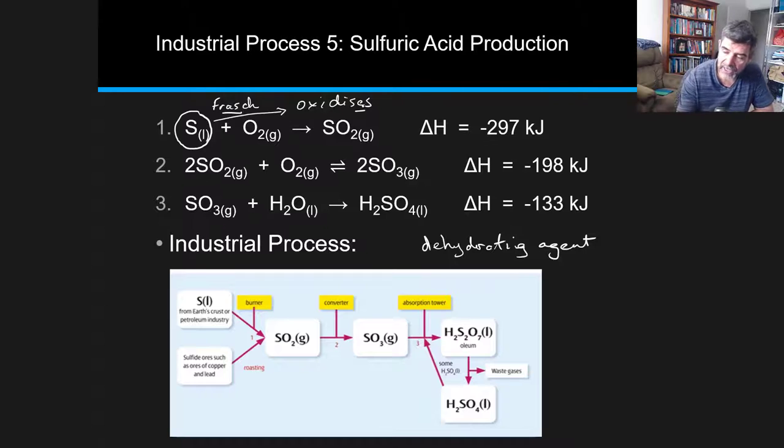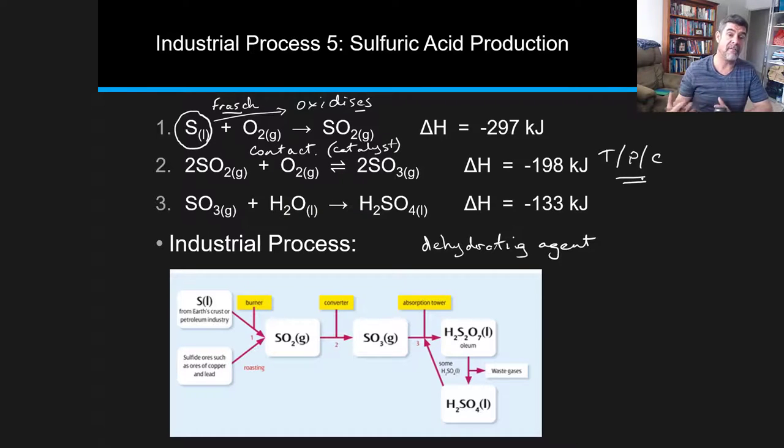The next part is called the contact process. And the main reason it's called the contact process is because we use a catalyst in order for the reactants to be in contact with the catalyst to speed up the rate of the reaction and also to control that reaction. Because this is an equilibrium, all of the things that we've previously talked about in terms of temperature and pressure and concentration all affect our yield and also are part of our reaction conditions that we can discuss in terms of sulfuric acid production.